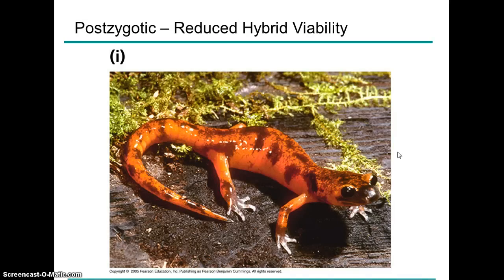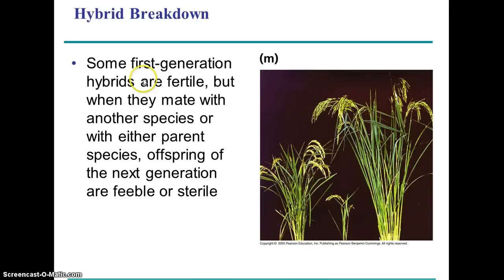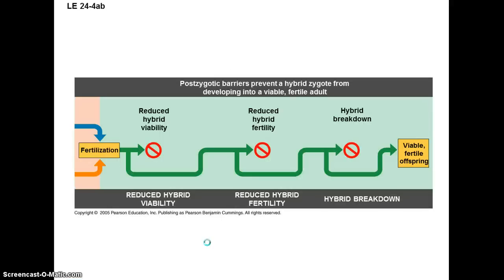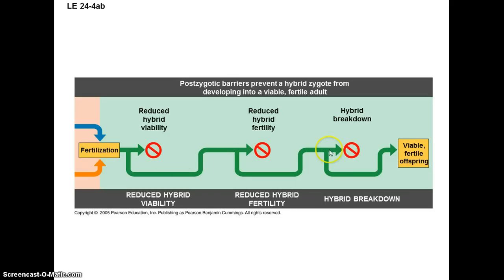Now, postzygotic barriers: here you get the formation of a zygote and an embryo, and even perhaps an individual, but often those hybrid individuals will have reduced viability — they don't survive very well. Other times they're sterile. In the case of a mule, which is the cross of a donkey and a horse, mules are sterile, so that's a dead end. Other times hybrids form and might be fertile, but they have lower fertility and tend not to persist for very long. Those are all postzygotic barriers.